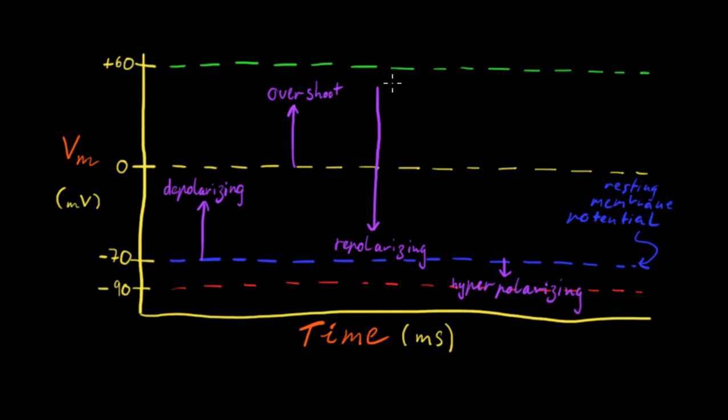And then when it's coming down, we say that it's repolarising, so it's coming from a positive back to a negative. And then we say that it can also hyperpolarise if it goes farther down than its resting membrane potential. So those are a few terms that we'll be using in this video.